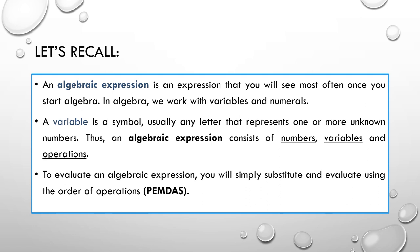Before we start, let us recall what is an algebraic expression. An algebraic expression is an expression that you will see most often once you start algebra. In algebra, we work with variables and numerals. A variable is a symbol, usually any letter, that represents one or more unknown numbers. Thus an algebraic expression consists of numbers, variables, and operations. To evaluate an algebraic expression, we simply substitute and evaluate using the order of operations or PEMDAS.